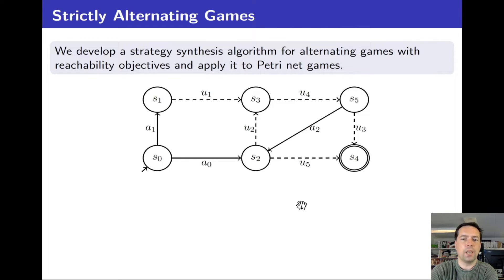Take a look at the following labeled transition system that has solid transitions that belong to player 1 and dashed transitions that belong to player 2. The objective of player 1 is starting from s0 to reach the goal state s4 and player 2 tries to prevent this from happening, and the players take turns in playing the game.